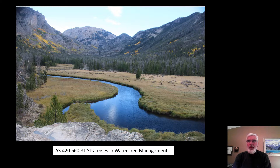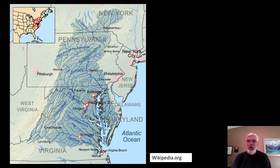Some watersheds and their streams are relatively small. Others are much larger, covering multiple states. This is a map of the Chesapeake Bay watershed.